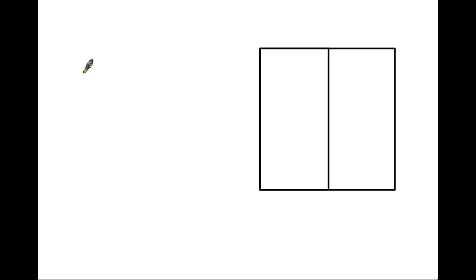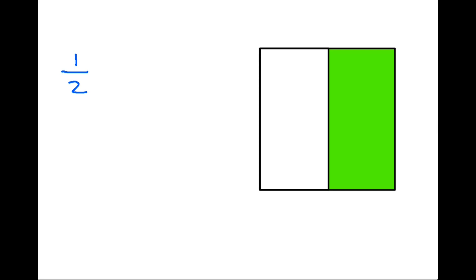Let's start by having a look at the shape on the right hand side. As you can see it is just a square, and I have already divided the square into two equal parts. Each one of those is a half, so let's start by shading in one half of the square.